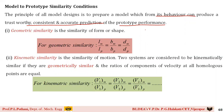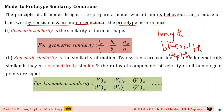In geometric similarity, geometry defines the shape and size of the product. To define shape and size you need three dimensions: length, breadth, and depth. For geometric similarity of a model to a prototype, the ratio of length of the model to length of the prototype must equal the ratio of breadth of the model to breadth of the prototype, and similarly for depth.